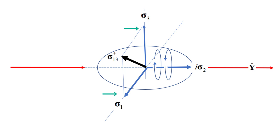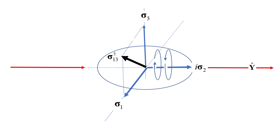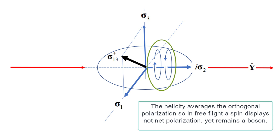However, here they are two axes on the same particle. The two spin oppositely to maintain their mirror property and superpose to produce a spin of magnitude 1. That is, in free flight, a spin one-half becomes a boson formed from the coupling of the two spins of one-half. Note, however, that the helicity spins this polarization so that it is averaged away. In free flight, spin is a spinning two-dimensional disk of polarization with zero net angular momentum, but it remains a boson until measured.